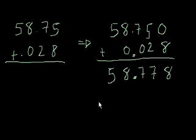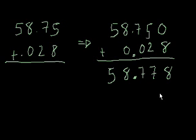It's that straightforward. You line up the decimal points, add any zeros that might make you feel more comfortable, do your addition, and drop down the decimal point. The answer is 58.778. And it's always good to do a reality check — does your answer make sense? I have 58.75, so roughly 58, almost 59.